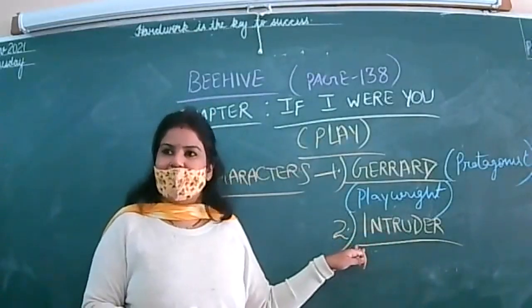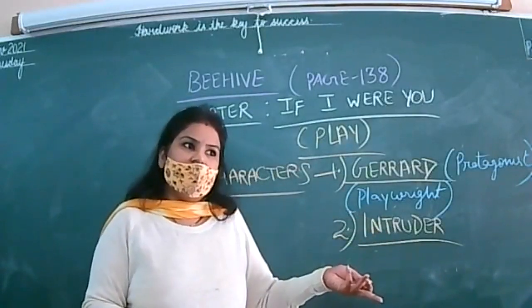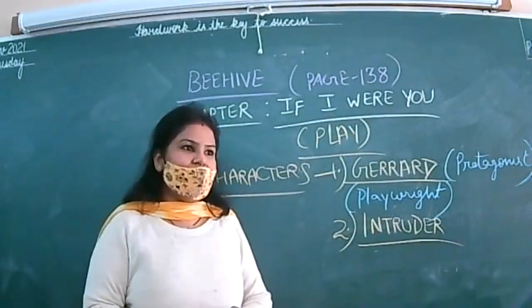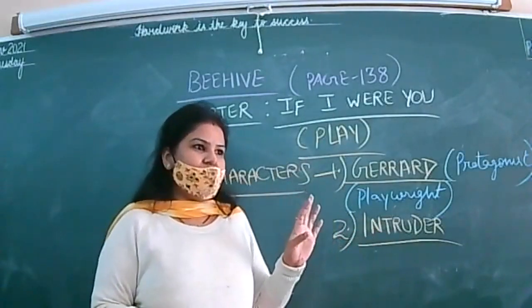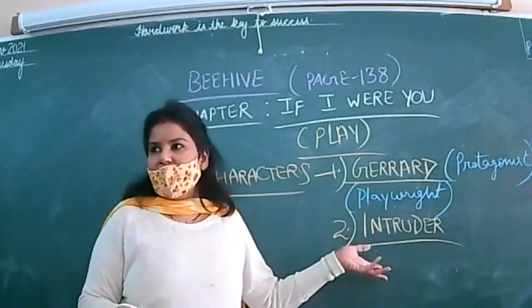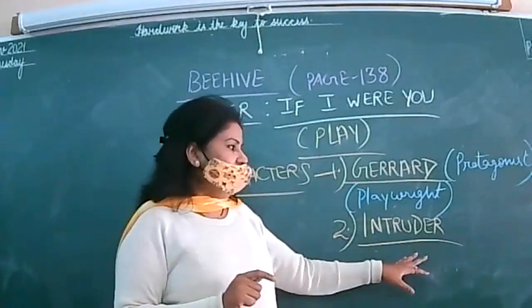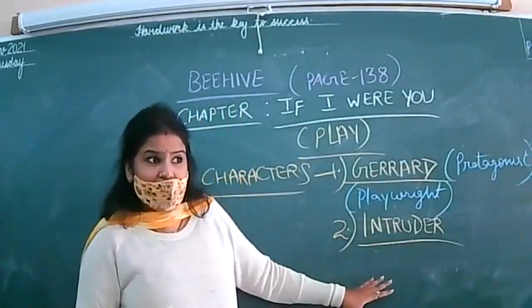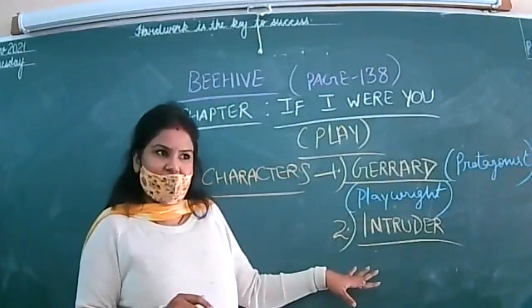So second character is the intruder, and it can be a thief also. Rashid is right in saying it can be a thief. Yes, thieves, do they ask for permission? But we do not use the word intruder for a thief. Why we are using the word intruder here? Because actually this character is having bad intentions.